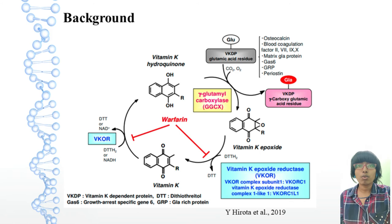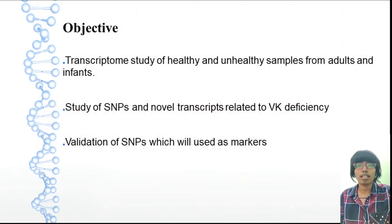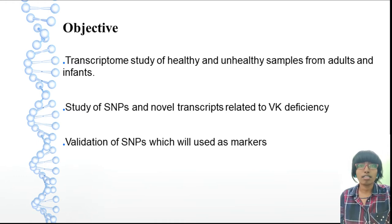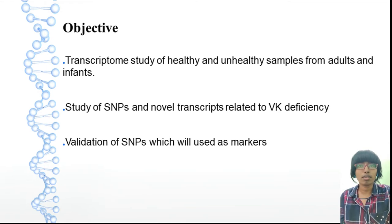The objective of our study is a transcriptome study of healthy and unhealthy samples from adults and infants, and study of SNPs to understand their reactions and novel transcripts related to vitamin K deficiency, and validation of SNPs which will be used as biomarkers.